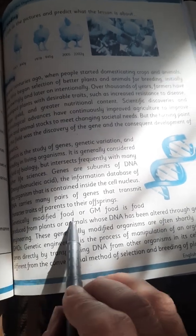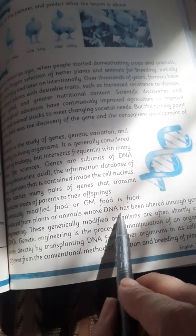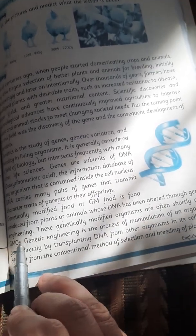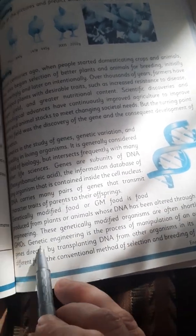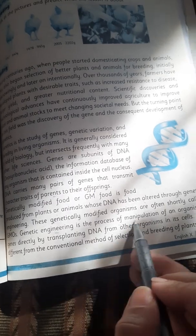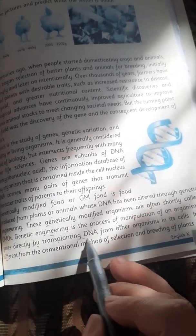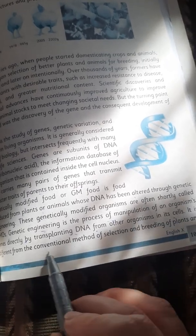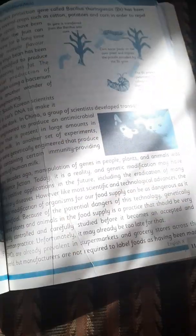Genetically modified food or GM food is food produced from plants and animals whose DNA has been altered through genetic engineering. These genetically modified organisms are often shortly called GMOs. Genetic engineering is the process of manipulation of an organism's genes directly by transplanting DNA from other organisms. It is different from the conventional method of selection and breeding of plants and animals.